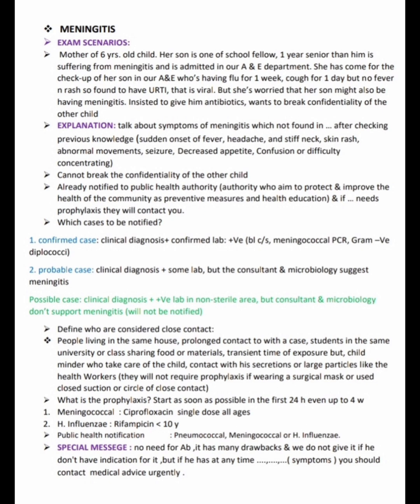Which cases need to be notified? Number one: confirmed case — clinical diagnosis plus confirmed lab, i.e., positive blood culture sensitivity, meningococcal PCR, or gram-negative diplococci. Number two: probable case — clinical diagnosis plus some lab support with consultant and microbiology suggesting meningitis. Possible case — clinical diagnosis with positive lab in a non-sterile area but not supported by consultant and microbiology — will not be notified.